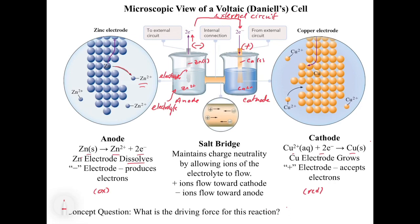The salt bridge's job is to maintain charge neutrality. At the anode, we're producing zinc 2+ in solution and sending electrons away, so positive charges build up on the left side. On the right side, copper 2+ is leaving the solution and going to metal form, so there's a lack of positives on the right. Ions transfer across the salt bridge — positive ions flow toward the cathode and negative ions flow toward the anode — to maintain charge neutrality.